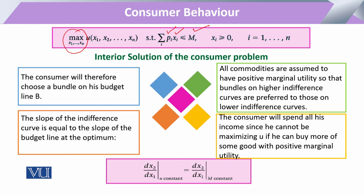We first assume two things: the marginal utility for each good that the consumer is using is positive, and it is positive because bundles on higher indifference curves are always preferred over lower levels. Additionally, the consumer will always spend his income in complete form — if he does not fully utilize his income, he cannot reach the complete trade-off point. So for utility maximization, the consumer takes his full income and spends it entirely.